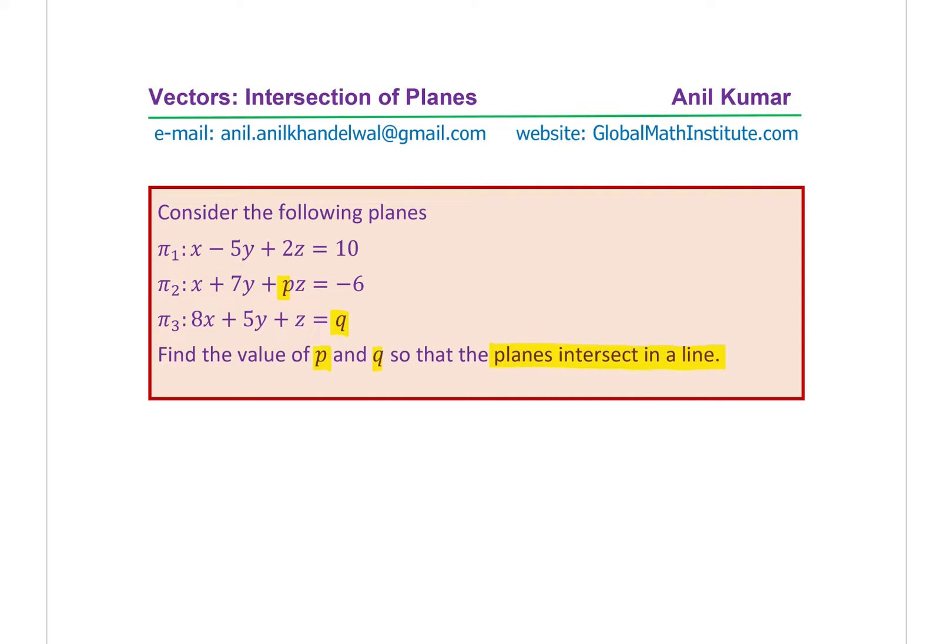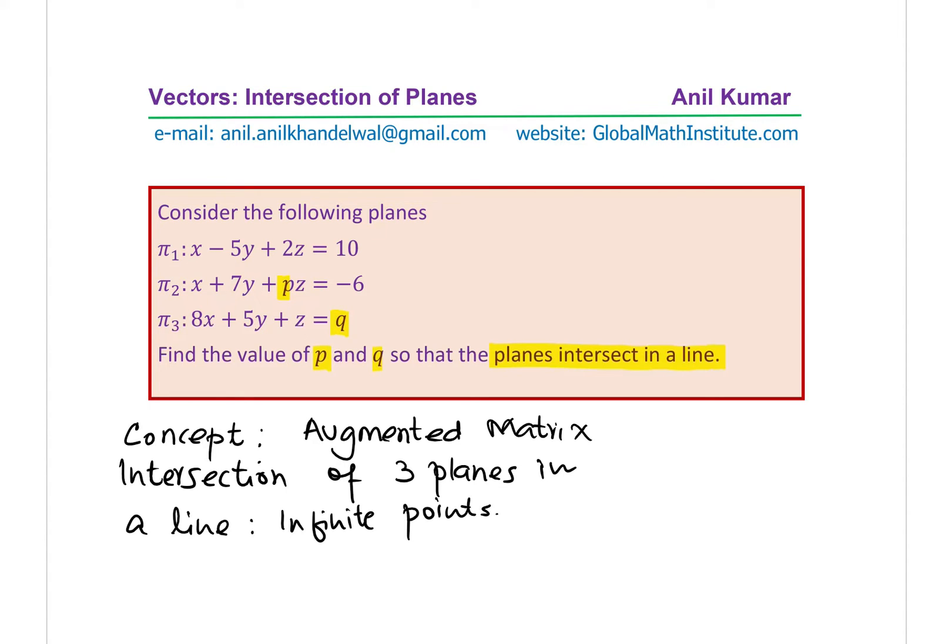Now let's look into the concept. We can have an augmented matrix. If you have a solution which is intersection of a line, that means intersection of three planes in a line, which means infinite points. So we are looking for a parametric form of lines. We expect one parameter to get the equation in terms of a line.